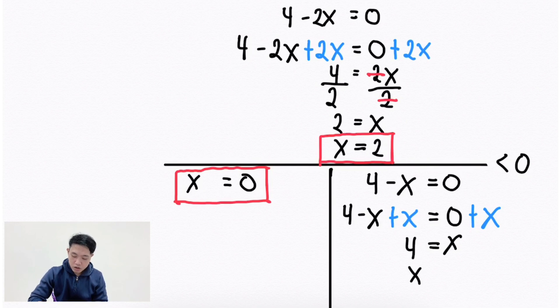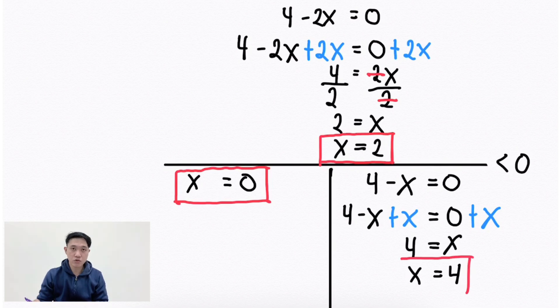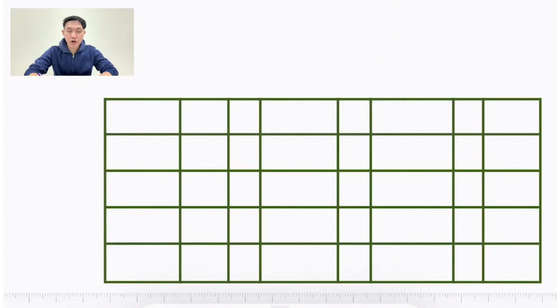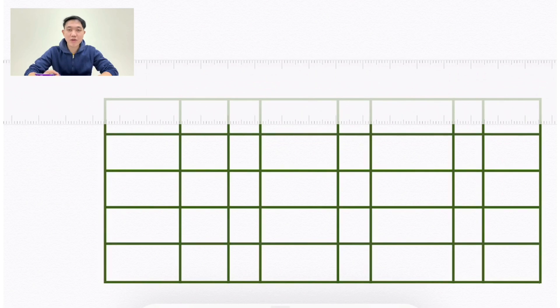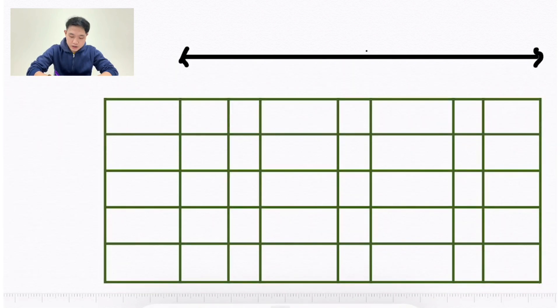By symmetric property, x equals 4. So now we have the x values: positive 2, 0, and positive 4. The purpose of the computed x values is to check which among them will be part of the solution set. Let's use a number line. The location of 0 is at the origin, and 2 and 4 are on the right side because they are positive numbers.